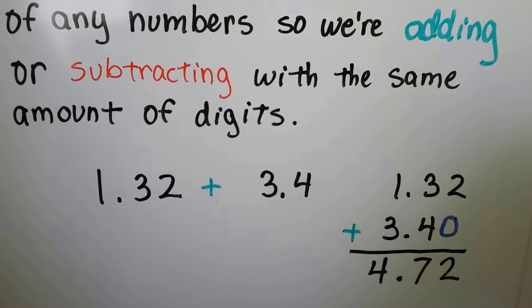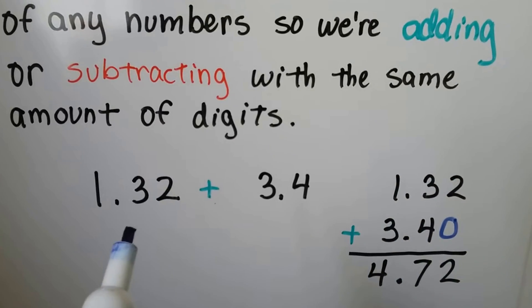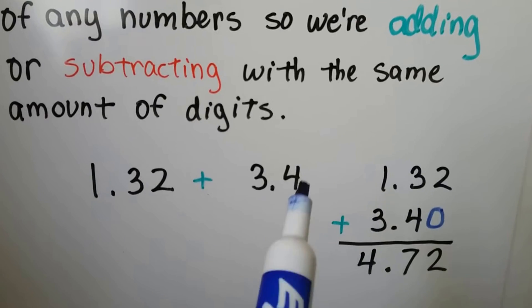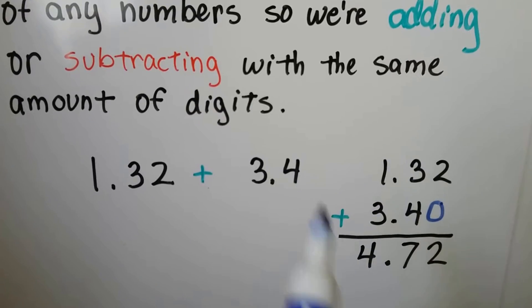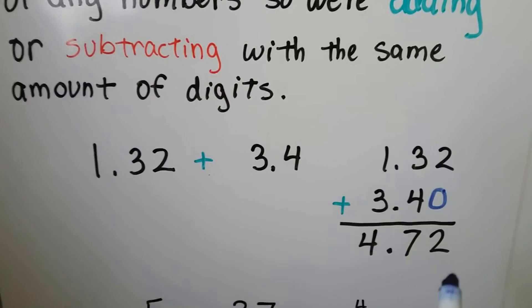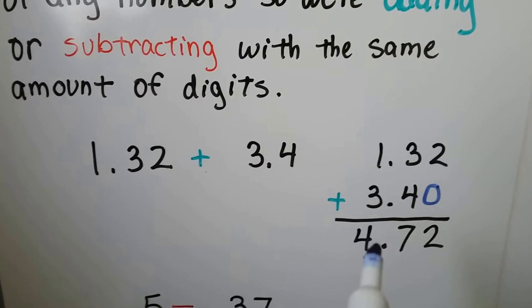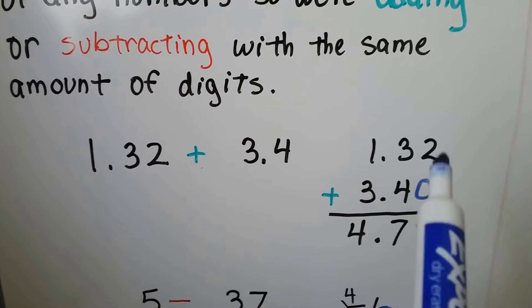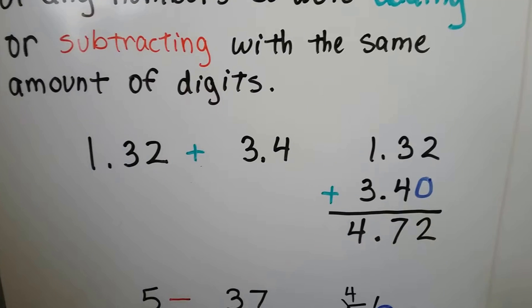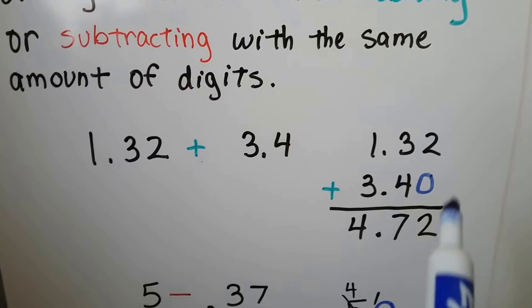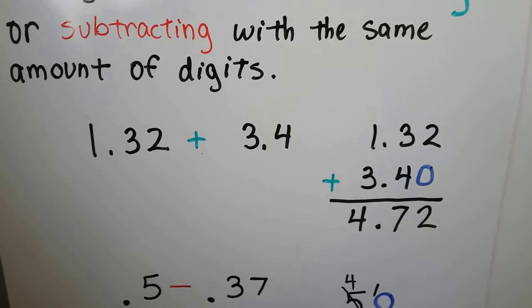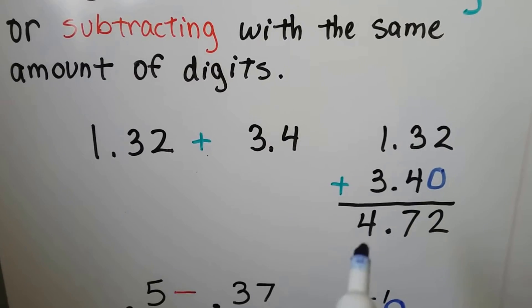So if we need to add 1.32 to 3.4, we can add a zero behind this 4 so that we're adding the same amount of digits. That way when we stack them with all our decimal points lined up nice, everything will add up easier. Now we can add 2 and 0 to get 2, 3 and 4 to get 7, and 1 and 3 to get 4.